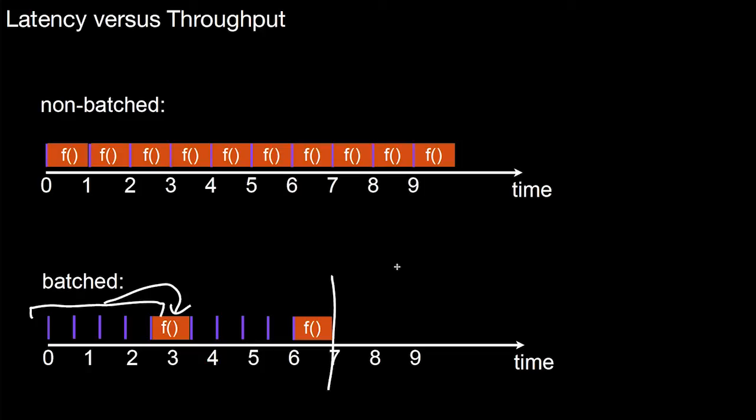However, important to understand here is not only this throughput. So we see that here the system took ten time units to process ten elements, which means per time unit you had ten elements. This means you have ten divided by ten as one element per time unit being processed.